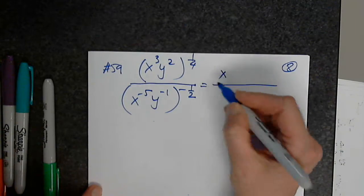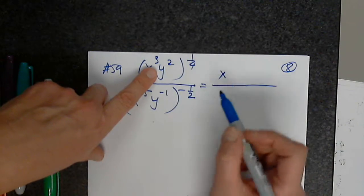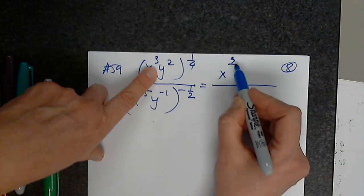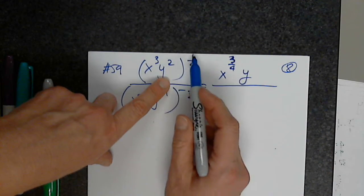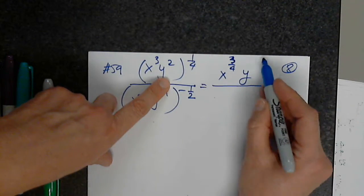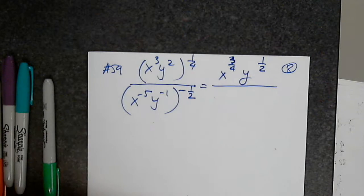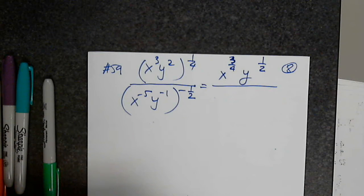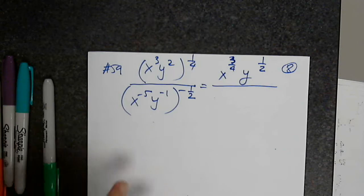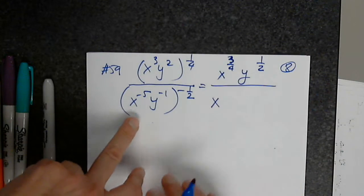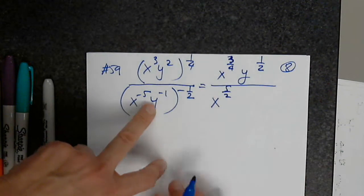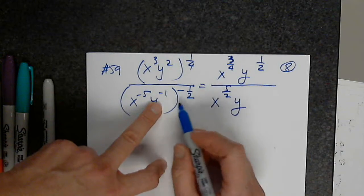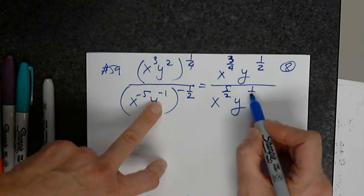Copy the base. 3 times 1 over 4 is 3 fourths. Copy the base — 2 over 1 times 1 over 4 is 1 half. Now copy the base and multiply the exponents: five halves. Copy the base, multiply the exponents: 1 half.